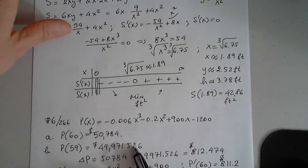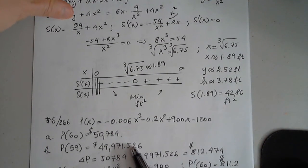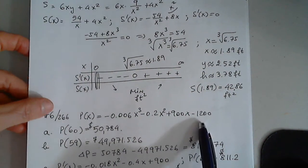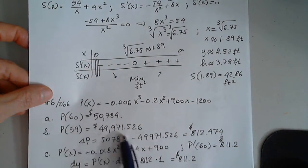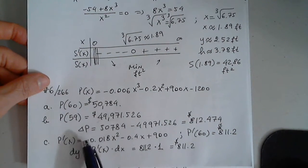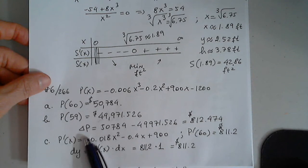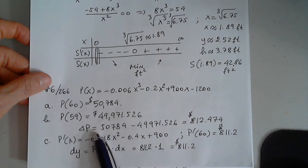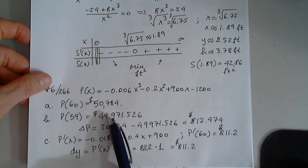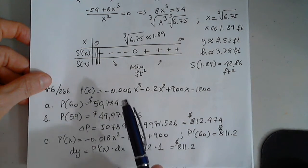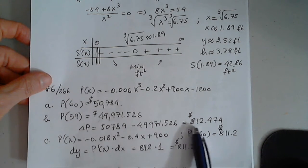Here we're given the profit. We were asked to evaluate it for 60 units, and we did. We plugged it in. Then for 59 units, we did. We plugged it in. And then in part B, we were asked to find the increase, the decrease, basically, in cost if we only manufacture 59. So this minus this will give us 812.